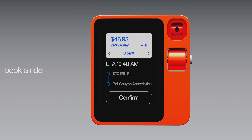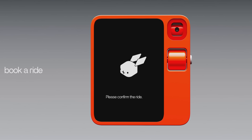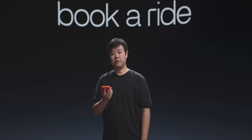People with three pieces of luggage: find me an Uber that can fit all of us — six people and three pieces of luggage. R1 responds: I recommend booking an Uber XL as it provides ample space for all passengers and luggage. Please confirm the ride. The ride shows up, I just hit confirm. The Uber is on its way.